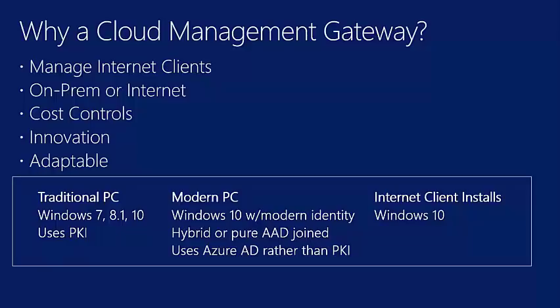One compelling server scenario for the CMG is DMZ servers needing Config Manager management. Normally, certain firewall ports and domain connectivity are required between DMZ systems and Config Manager. With the Cloud Management Gateway, you don't need any of that — you just need the DMZ servers to reach the internet, which they do anyway. The traditional PC scenario uses PKI certificates to secure the communication channel.